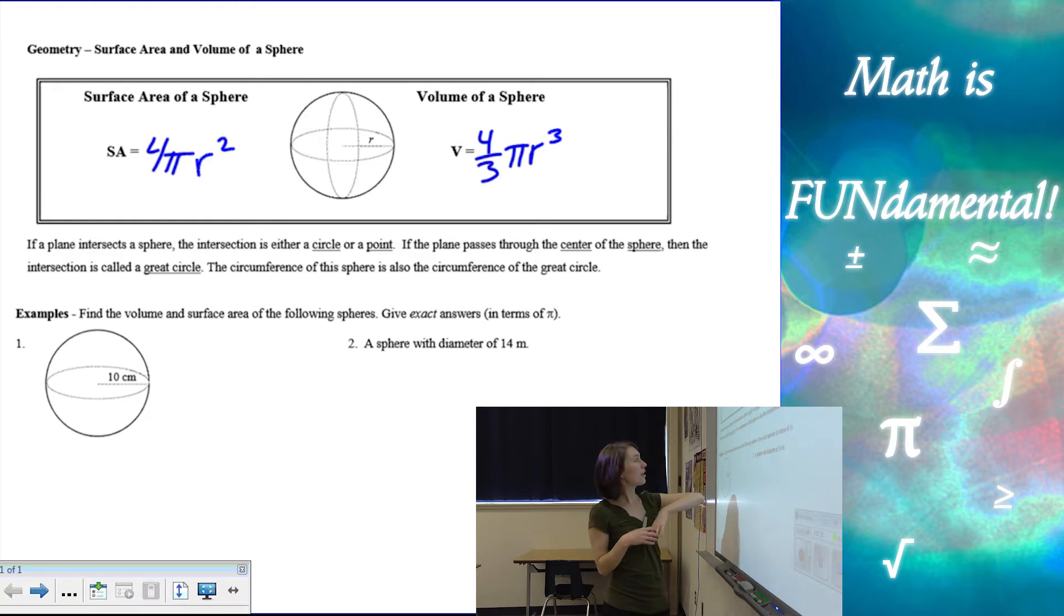Alright, now, just a quick little point. If a plane intersects a sphere, the intersection is either a circle or a point. So if you think about a sphere, if a plane, like a piece of paper, just barely touches the sphere, it's going to intersect with that sphere on just one single point. But if the paper cuts through the sphere, its intersection is going to be a circle. Now, if the plane passes through the center of the sphere, then it's called a great circle, that intersection piece or the cross section. And the circumference of the sphere is what we consider the circumference of the great circle.